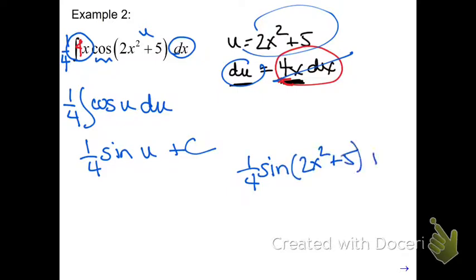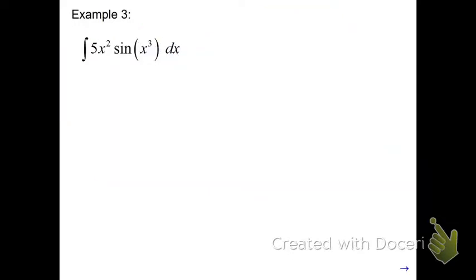So what was the math trickery I did for this one? You need to have all of du in the problem. So if you're missing that 4, you can put it in front here and balance it out with a 1/4. All right, let's try another one.